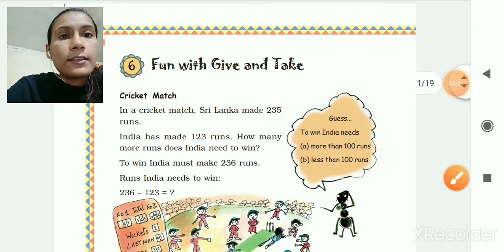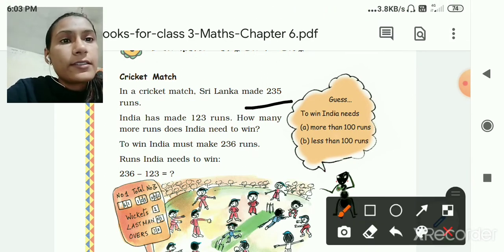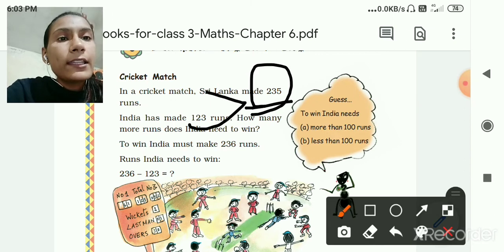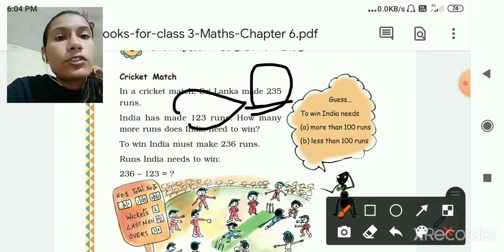Let's see Cricket match. In a cricket match Sri Lanka made 235 runs. How many runs? Sri Lanka made 235 runs and India has made 123 runs. How many more runs does India need to win? To win India must make 236 runs. Runs India needs to win, so 236 minus 123.